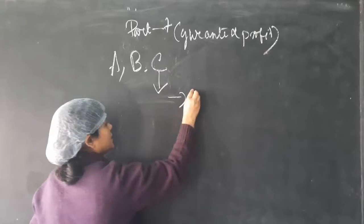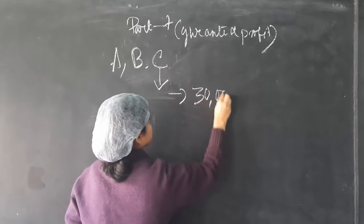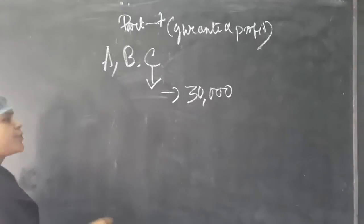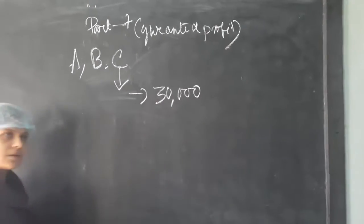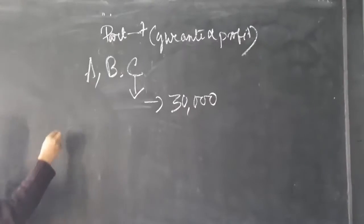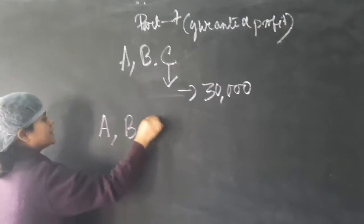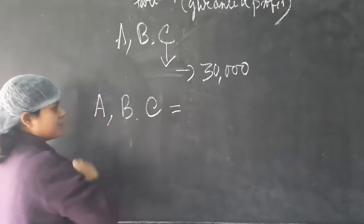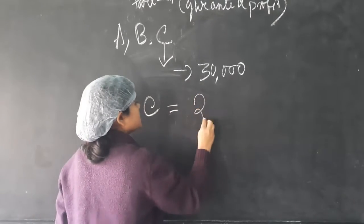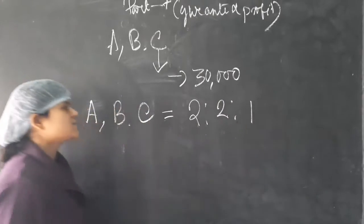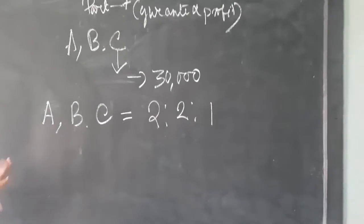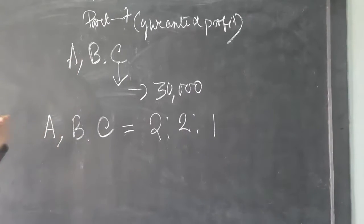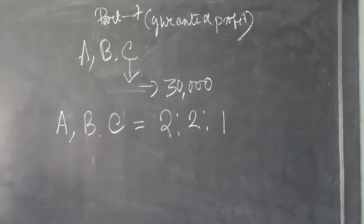Suppose C has joined the business with a guaranteed profit of rupees 30,000. But there is also their profit sharing ratio. Suppose the profit sharing ratio of A, B, C is 1:2:1. If I calculate each one's portion on the basis of 1:2:1...